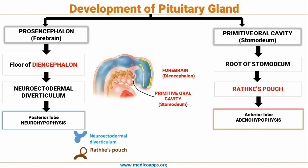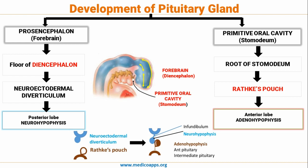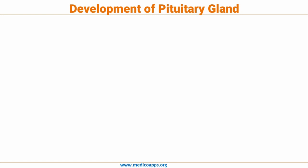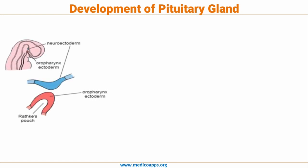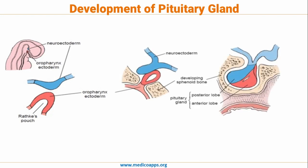In the diagram, below is the Stomodeum from which the Rathke's Pouch comes, and above is the Neuroectodermal Diverticulum. They come together to form the Pituitary Gland. On both sides, the developing Sphenoid Bone forms the Sella Turcica. The blue color shows the Neuro Ectoderm and the red color shows the Rathke's Pouch. Embryologically, the anterior Pituitary is derived from Rathke's Pouch and the posterior Pituitary is derived from the Neuro Ectoderm, which is reflected in their different functions and histology.